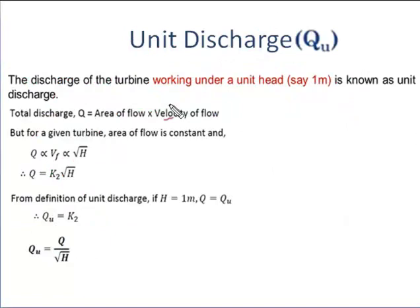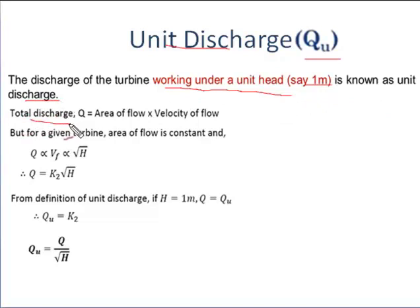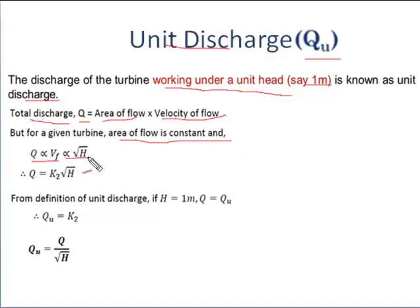We now come to the second unit quantity, unit discharge, represented by Q_u. The discharge of the turbine working under a unit head of one meter is known as the unit discharge. We know that Q = area of flow × velocity of flow. For a given turbine, area of flow is constant, so Q is directly proportional to flow velocity, and flow velocity is directly proportional to √H.